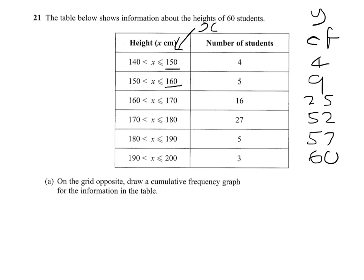Remember that. So your first coordinate then is 150 with 4. The next coordinate is 160 with 9 and so on. So we'll now plot that on the cumulative frequency graph.